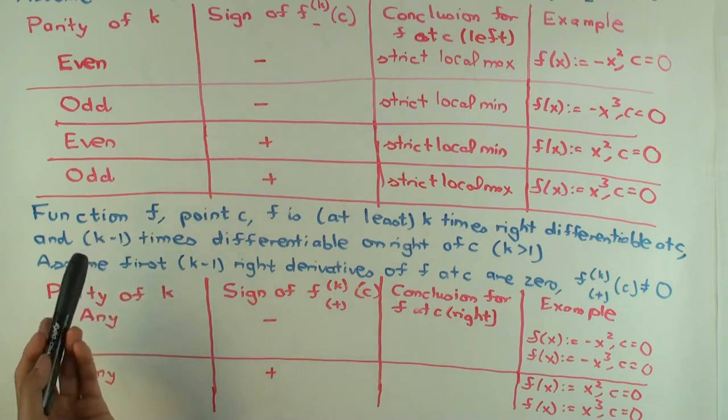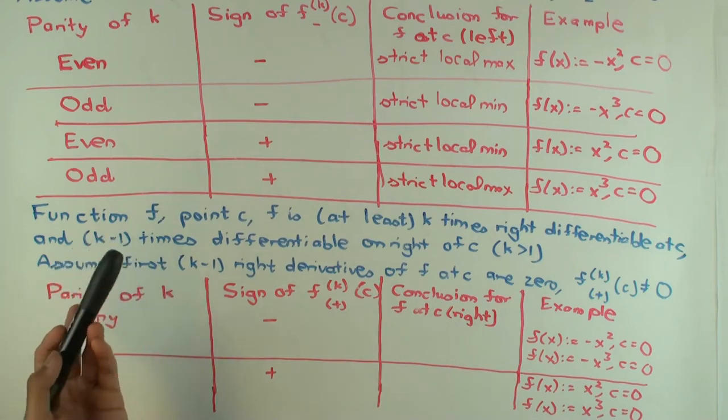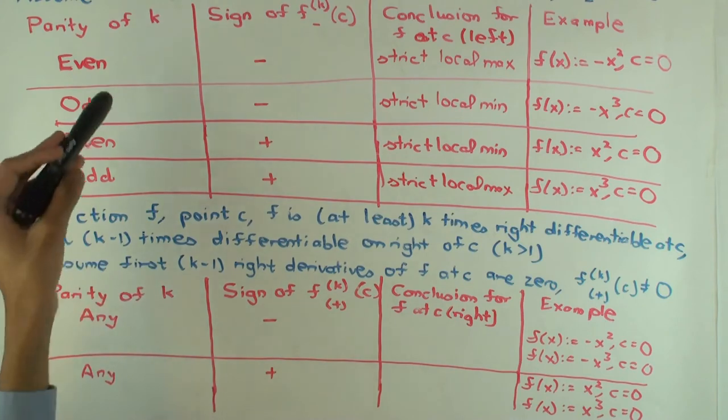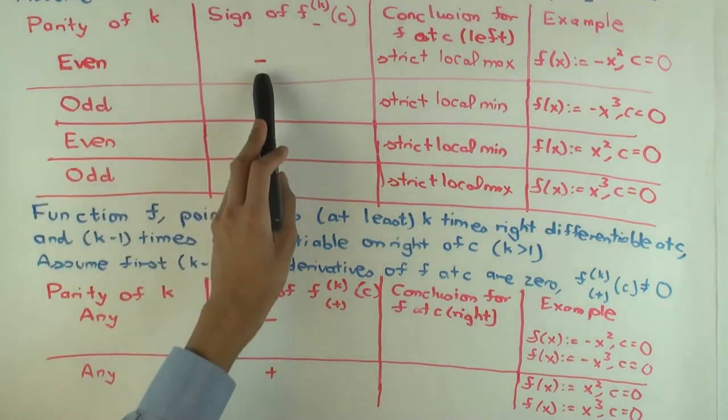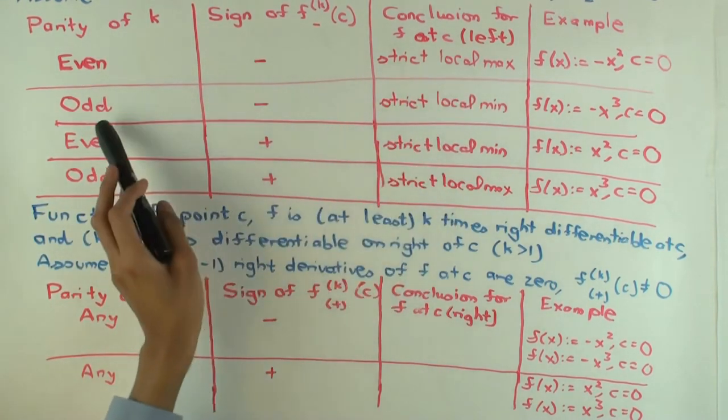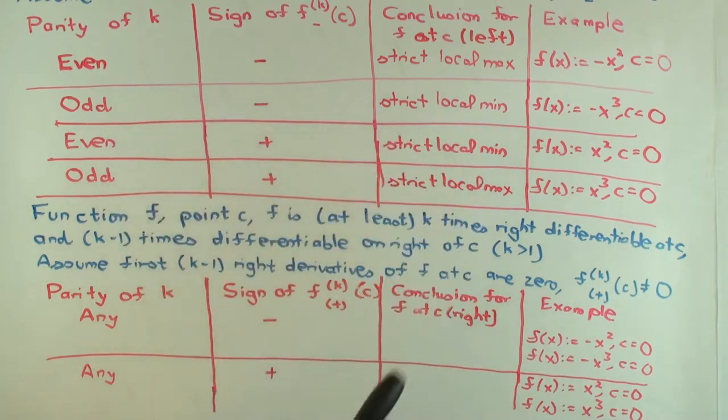So in the left case, it actually mattered whether k was even or odd, and if you see up here, for even and negative, you get strict local max, from odd and negative, you get strict local min. But for the right case, it doesn't matter. I'll just fill the table, and then we'll come back to this.